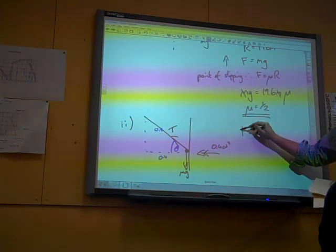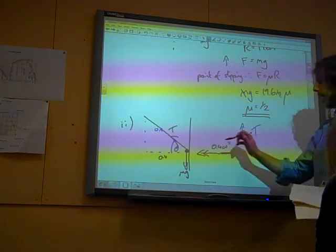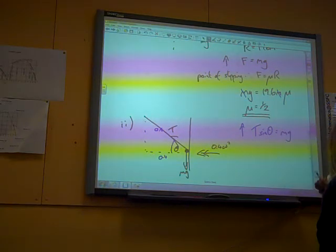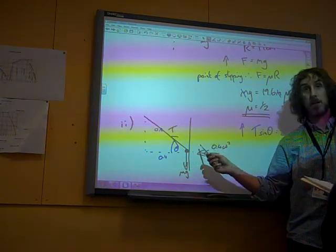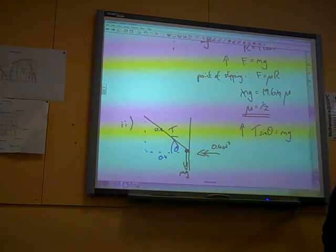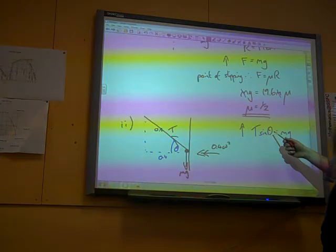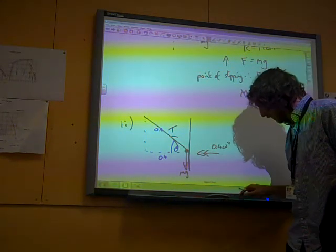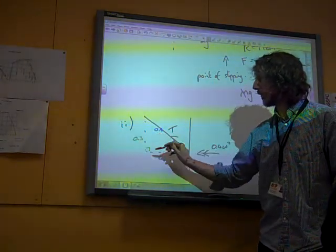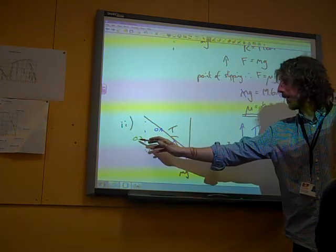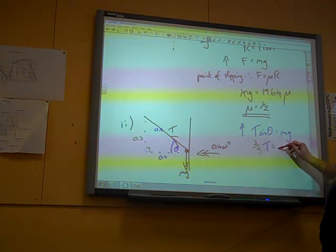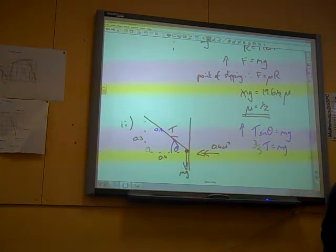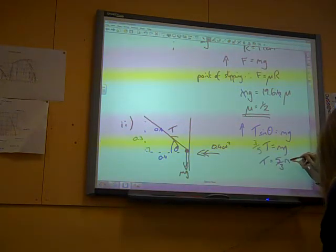So, let's resolve in our directions again. If we resolve vertically, we've got T, hang on, T sine theta is equal to mg. We're happy that these are the only two forces now, because we've no longer got a contact with the wall, so there's no frictions, there's no contact force. Sine theta, well, we've got, oh, this is quite nice actually, isn't it? See what they've done? 0.4, 0.5, it's a right angle triangle, so that's 0.3. So, sine theta is opposite over hypotenuse, so that is three-fifths of T is mg. So, T is 5 over 3 mg.